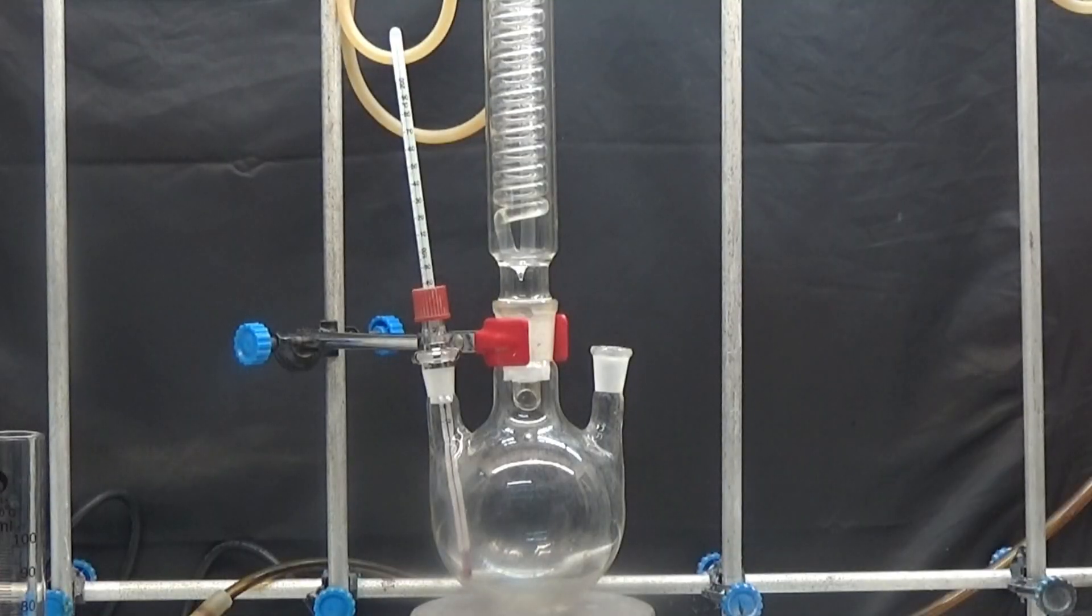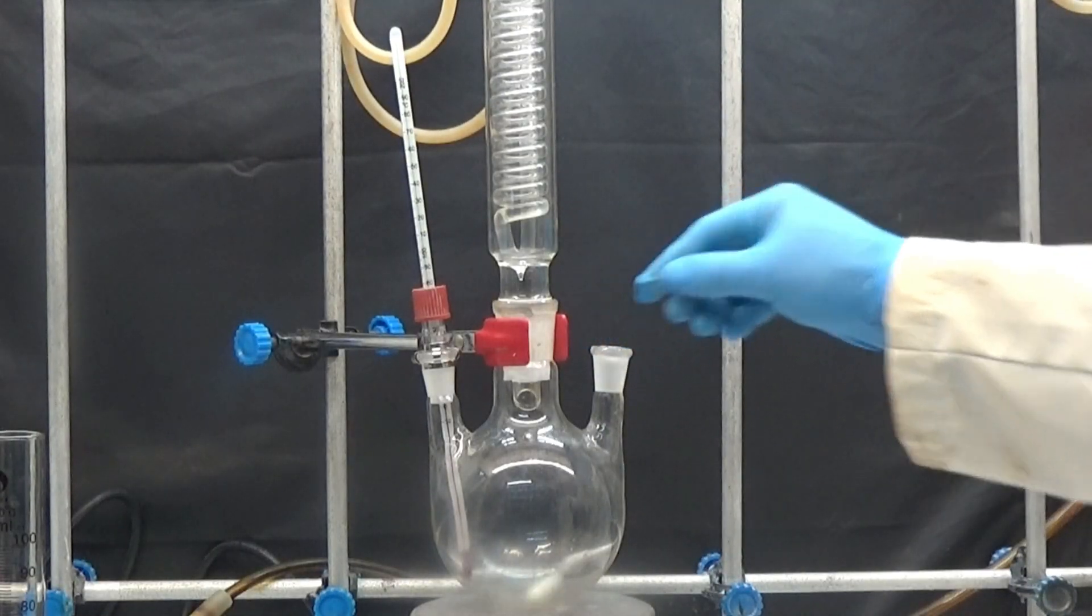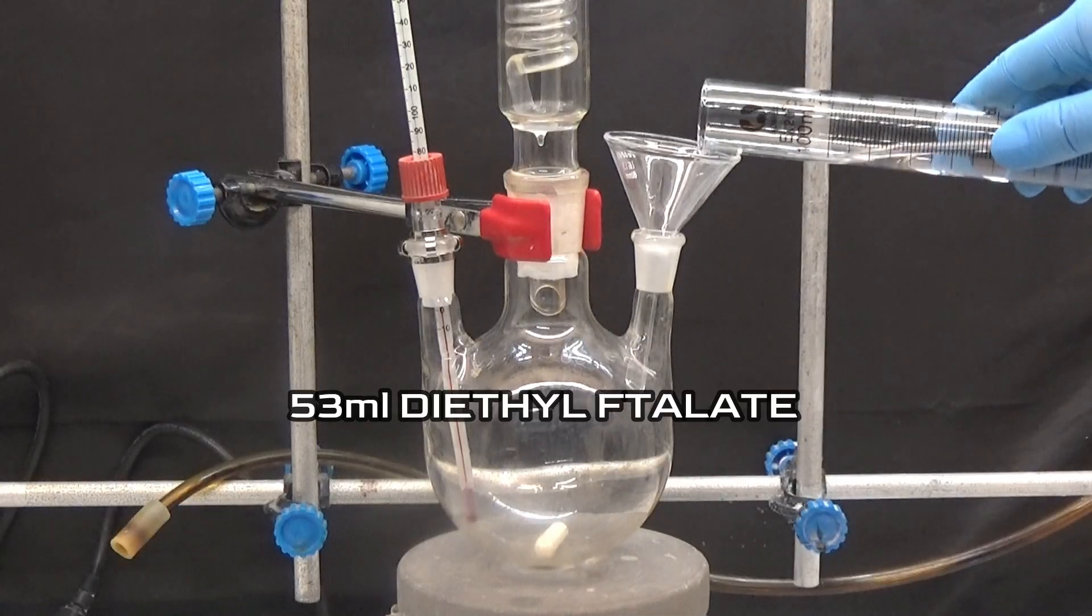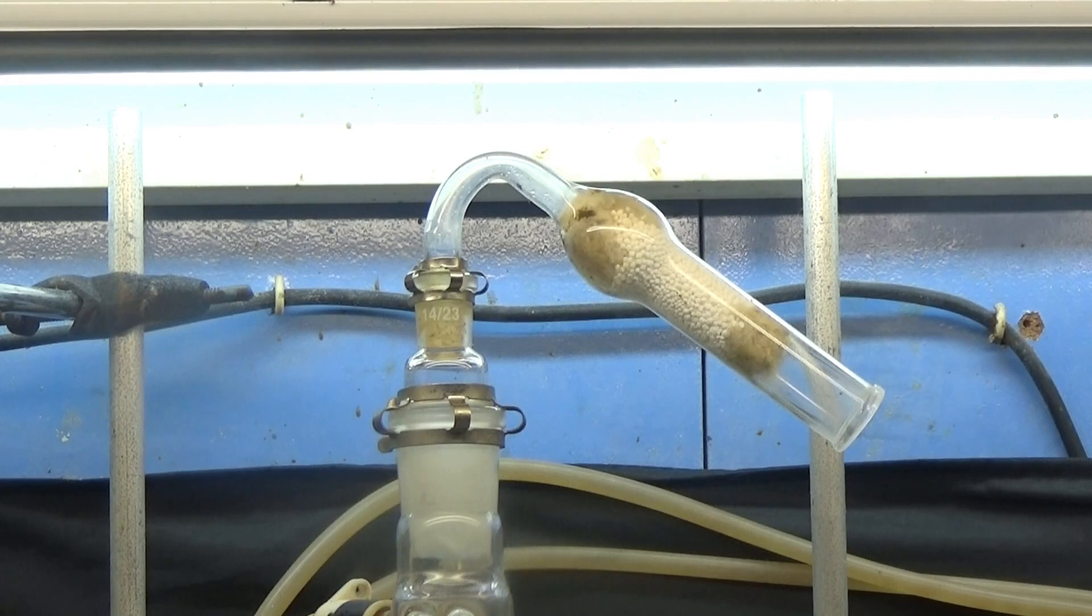In a 500ml three-necked flask equipped with a thermometer, reflux condenser, and addition funnel, we added 53ml of diethyl phthalate. To safeguard the system from humidity, place a calcium chloride tube at the condenser outlet.